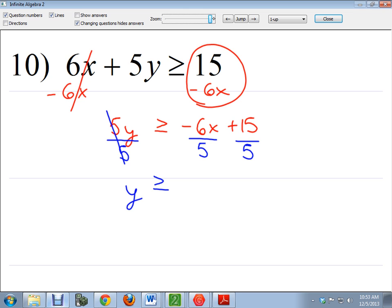Negative 6, is that dividable by 5? Can I divide 6 by 5? No. I would get like 1.2 or something like that. So we want to leave it as a fraction which would be the negative 6 fifths x plus, 3. 15 divided by 5 is 3. We've got to make sure that we're dividing everything by 5. Now this is y by itself.